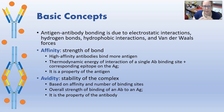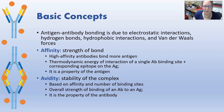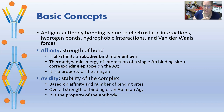Antigen-antibody bonding — how they stick together — is due to electrostatic interactions, hydrogen bonds, hydrophobic interactions, and van der Waals forces. Affinity is the strength of the bond between the antigen and the antibody; high-affinity antibodies will bind more antigen. It's the thermodynamic energy of interaction of a single antibody binding site plus its corresponding epitope on the antigen, and it is always a property of the antigen — how well the antigen fits that antibody. Avidity is the stability of the complex once formed, based on affinity but also on the number of binding sites — the overall strength of binding of an antibody to an antigen.